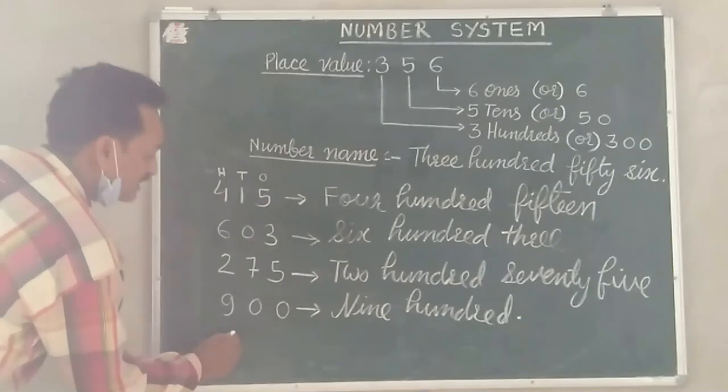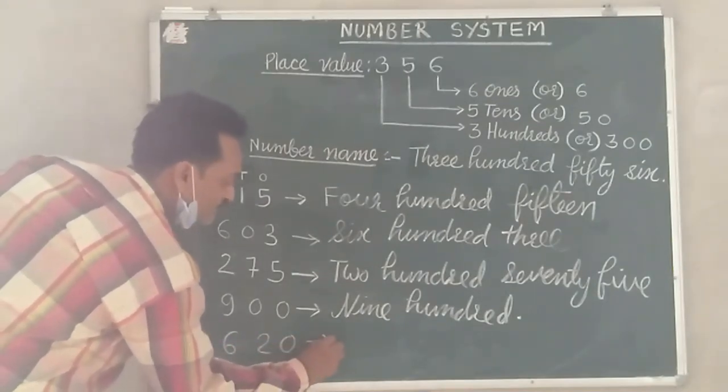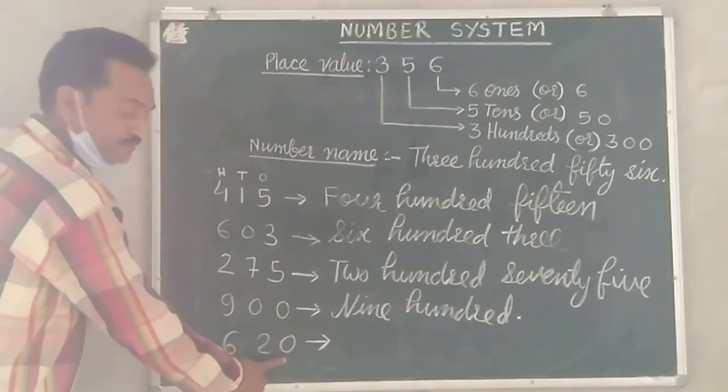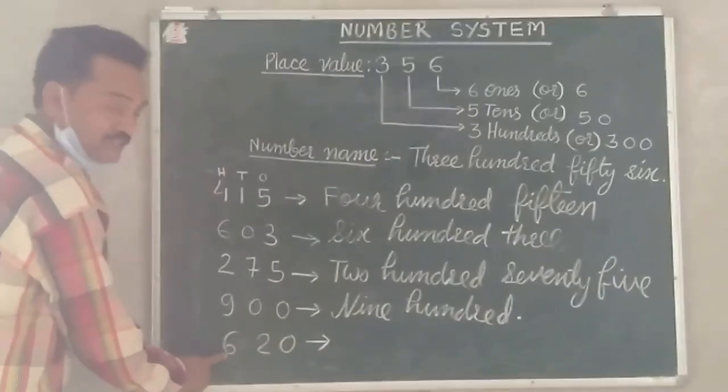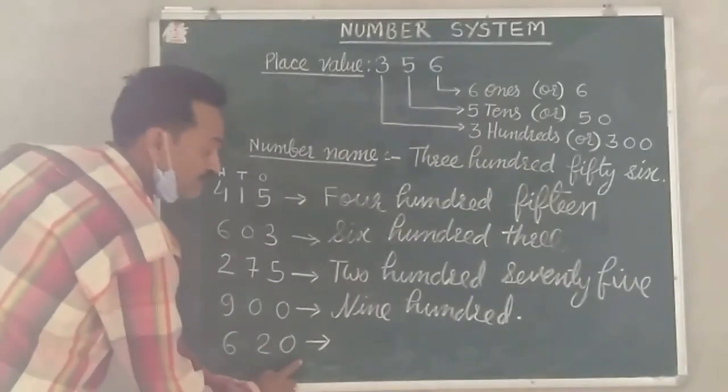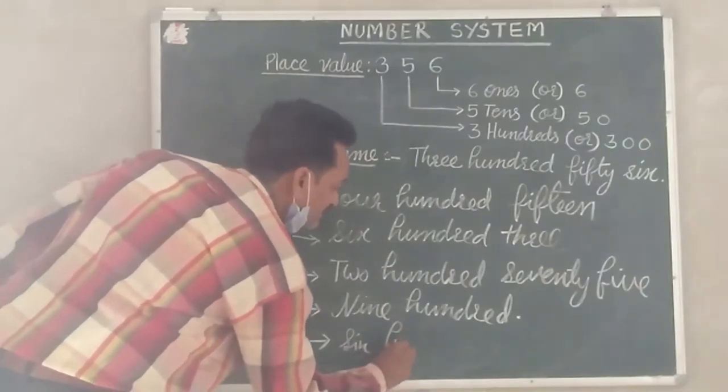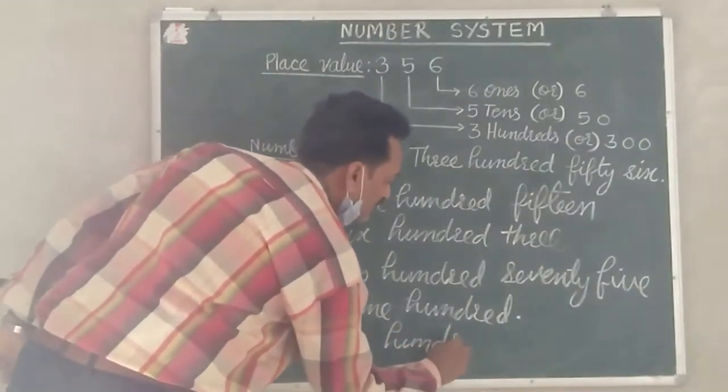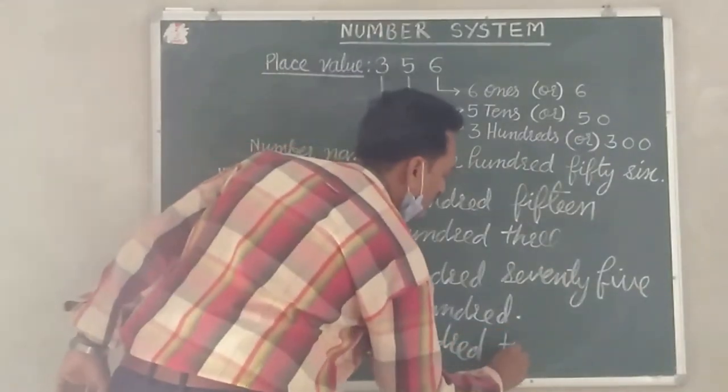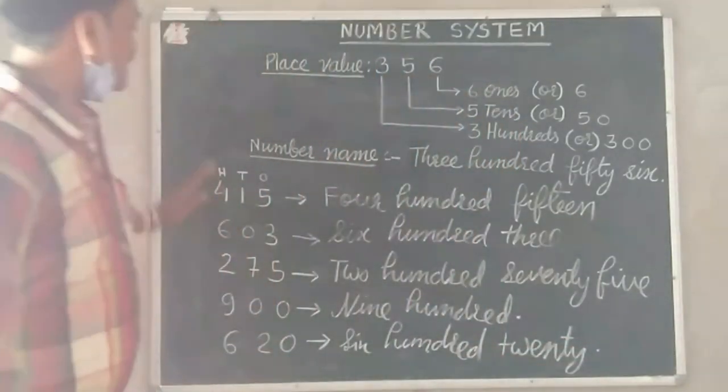If we have a number 620, tens 2, hundreds 6. So 120, 600, 20.